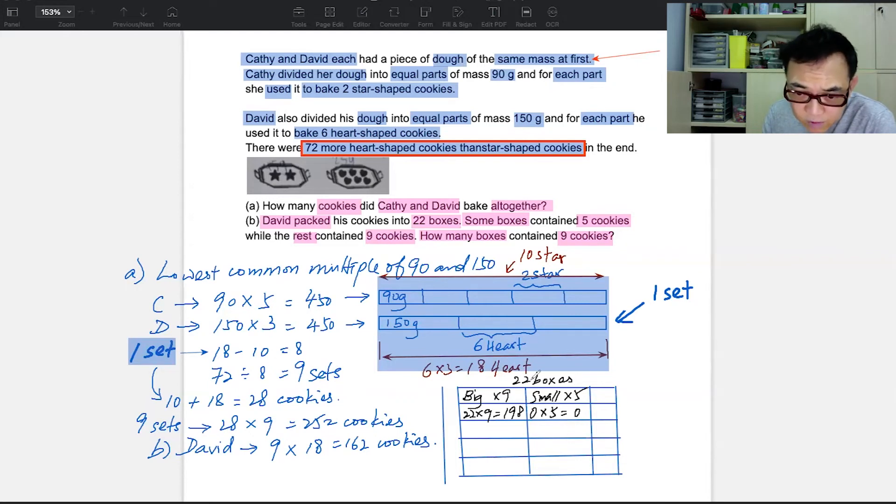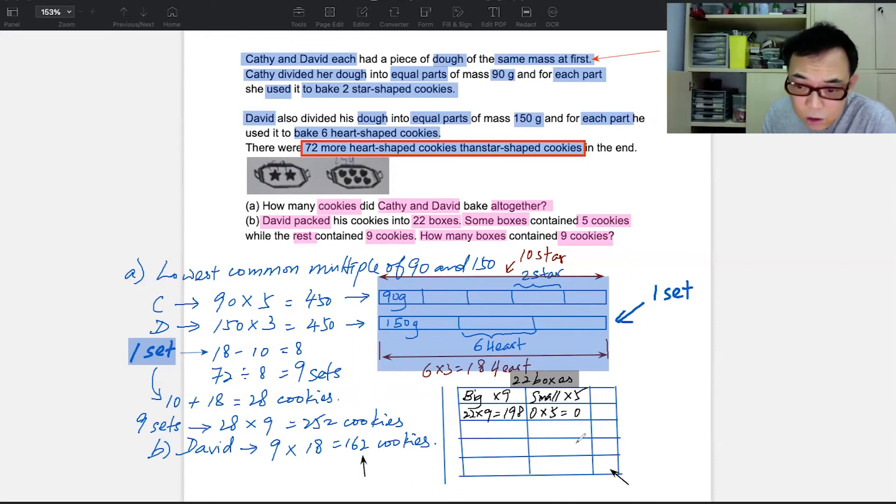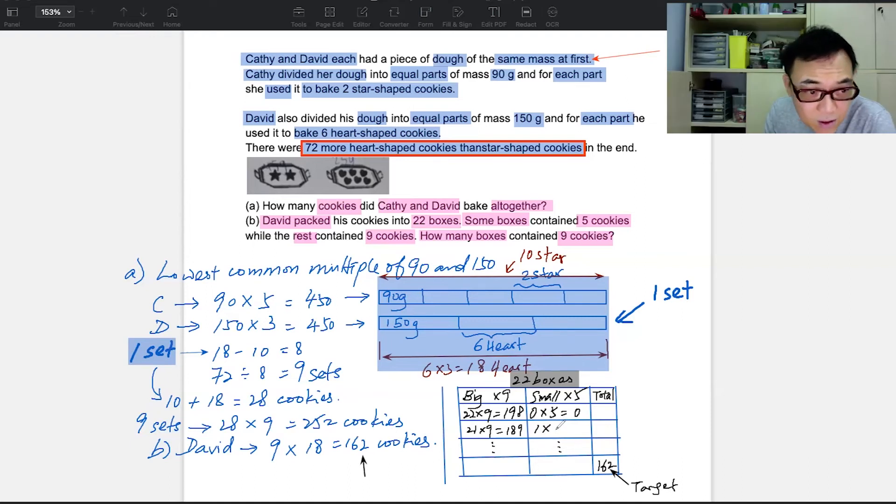So now we're going to put in the values that we have found. And in the first one on top, you're going to write the big and small. This question only has David, no more Katie already. So this will be times 9 and this one will be times 5. Now we know that we have a total of 22 boxes. So how do we start? Li Jie, I'll give you a clue. If all the 22 boxes are big, how many small boxes are there? Zero. Zero, exactly. So this will give you zero and this will give you 198.